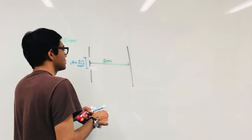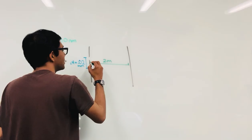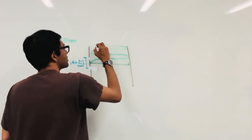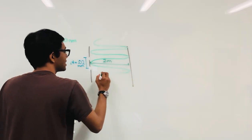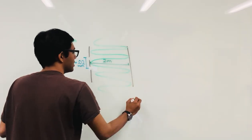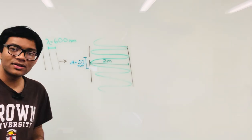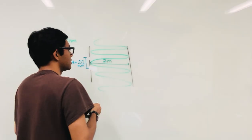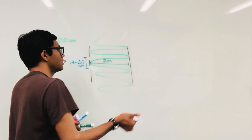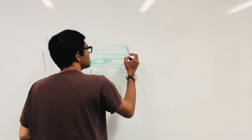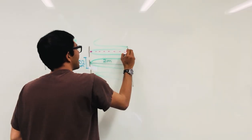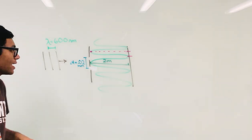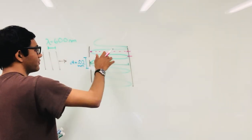Let's draw out the double slit interference pattern — here's the constructive central fringe, destructive, constructive, and so on, the alternating series of fringes. What I'd like to do first is figure out where the first dark fringe and the first bright fringe are — specifically, their angular positions.